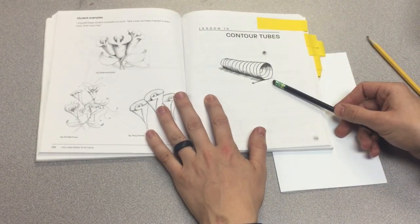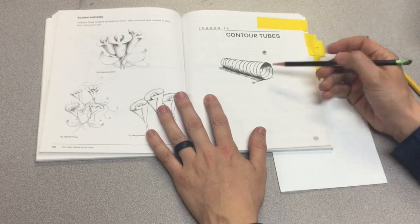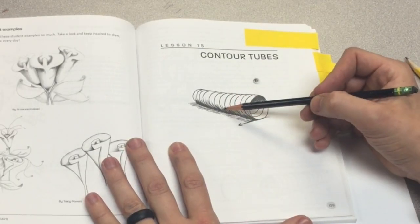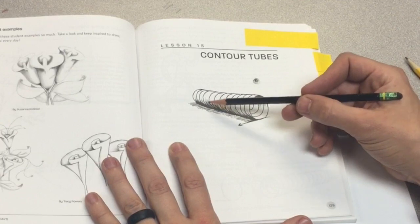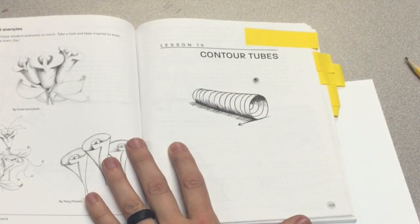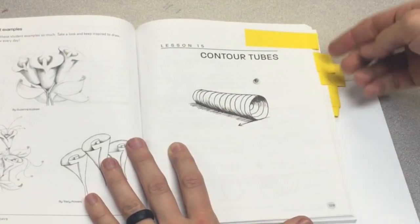We have not drawn the contour tubes, but a contour line just indicates the curve of an object. This is representing a cylinder.